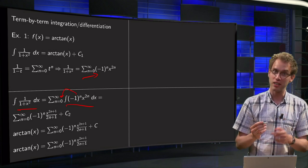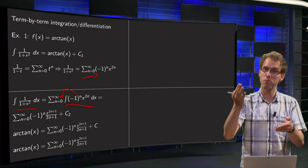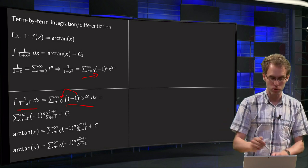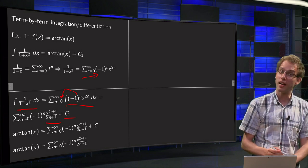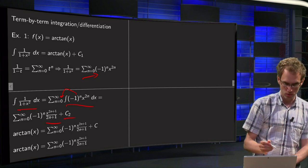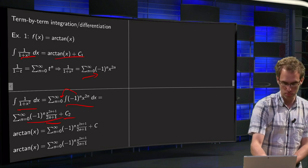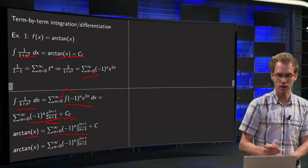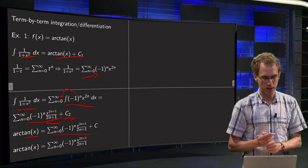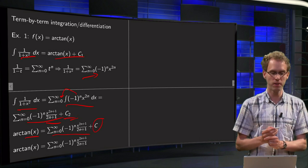We integrate x to the power 2n, which gives x to the power 2n plus 1 divided by 2n plus 1, plus constant c2. We can then combine: the integral equals arctan(x) plus c1 equals this series plus c2, so arctan(x) equals the summation plus c2 minus c1, which we rename to constant c.